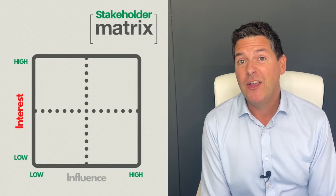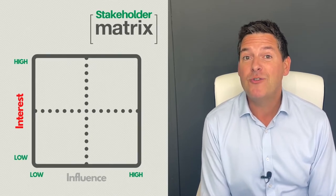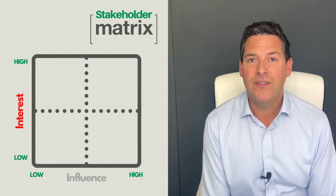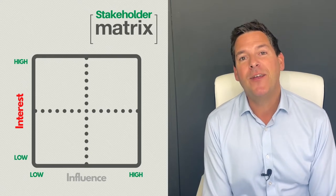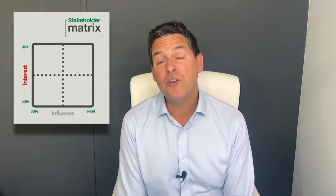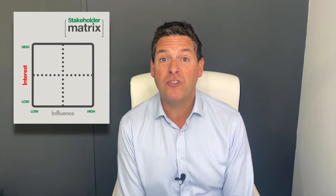On the vertical axis you write the word 'interest' — understanding how interested in your project or change each stakeholder is. If it's a finance system, your director of finance is very keen for it to happen, so they'd be very interested. There will be others who are pretty indifferent, and you may well have people who are totally against it and much prefer the way they're doing things now.